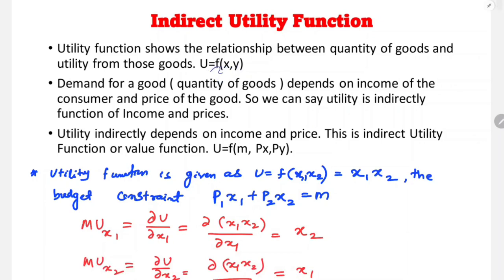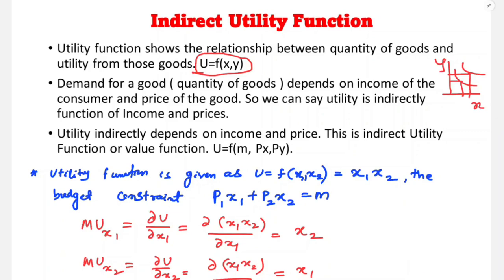A utility function depends on the quantity of the goods. With higher indifference curves, satisfaction is higher. Higher indifference curves correspond to higher quantity of good X and good Y. As the quantity of X and Y increases, utility increases.